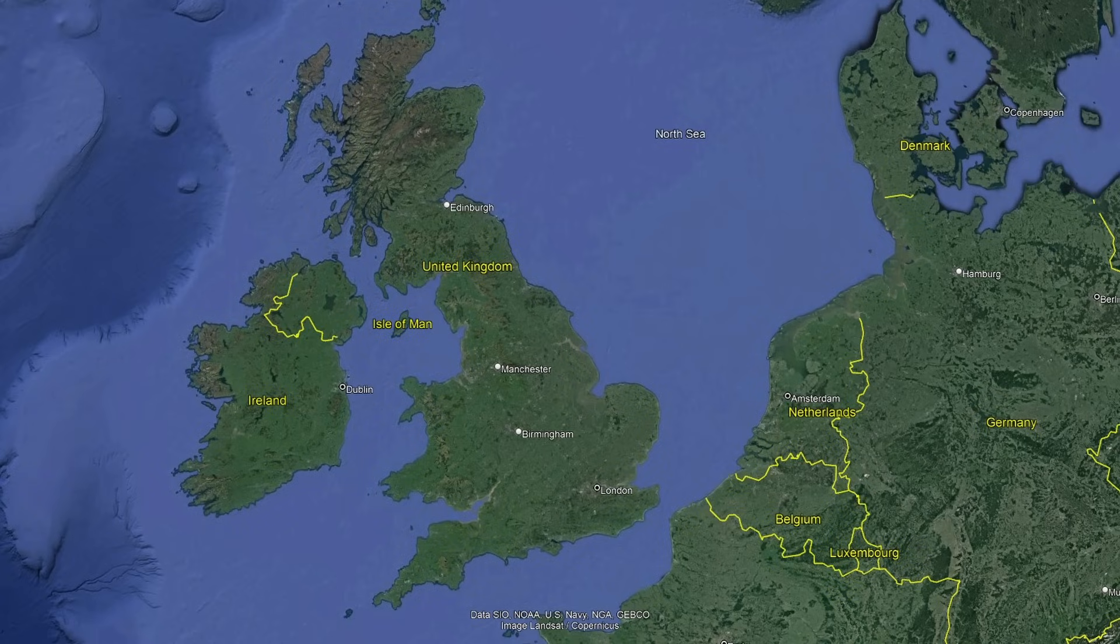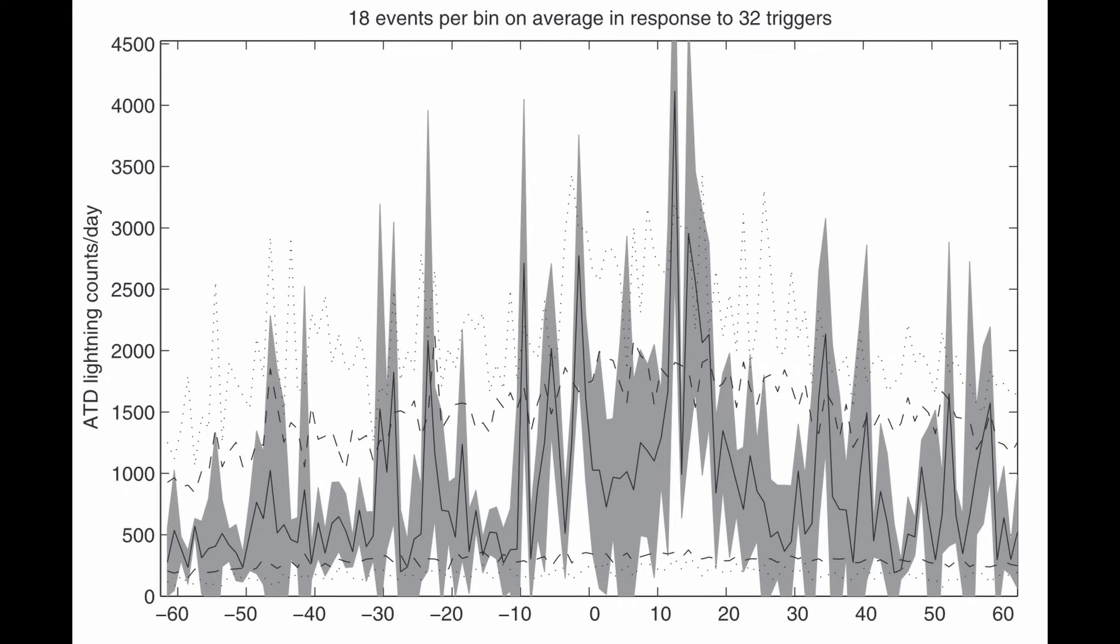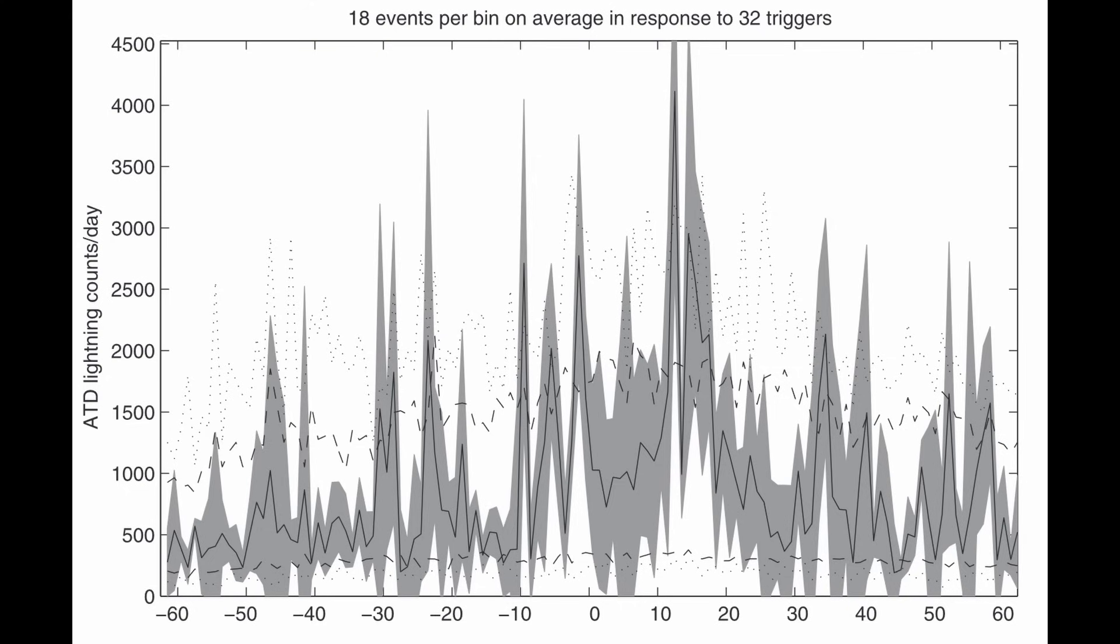They conducted a comparative analysis by juxtaposing the frequency of lightning bolts with the data from NASA's ACE spacecraft which monitors the influx of solar wind streams reaching Earth. Their findings unveiled a noteworthy pattern.